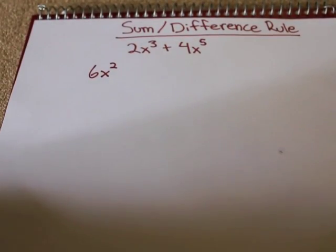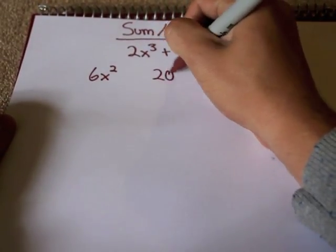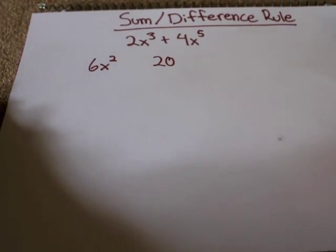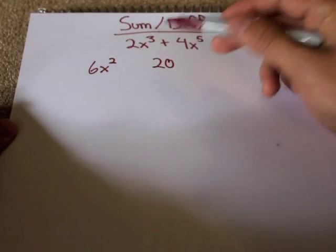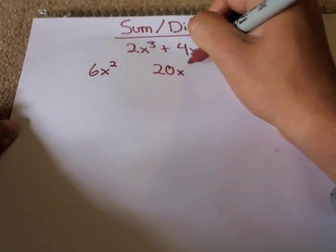And now you'll do the same thing with 4x⁵. So you'll bring 5 down to the 4, and you'll get 20 when you multiply 5 times 4. And then you'll subtract 1 from the original exponent just like you did over here. So 5 minus 1 would equal 4, so you get x⁴.